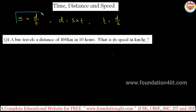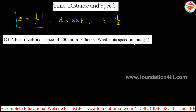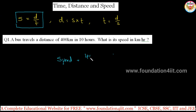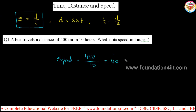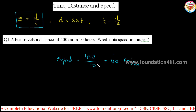To find speed, use distance divided by time. A bus travels a distance of 400 kilometers in 10 hours — what is its speed in kilometers per hour? This is a direct formula: speed equals distance by time, so 400 divided by 10 gives 40 kilometers per hour.